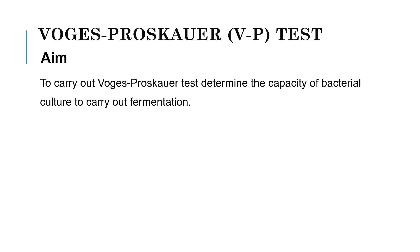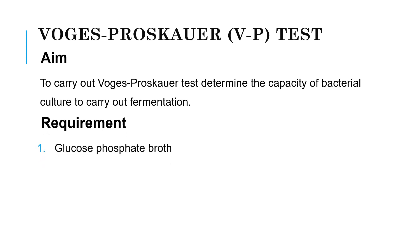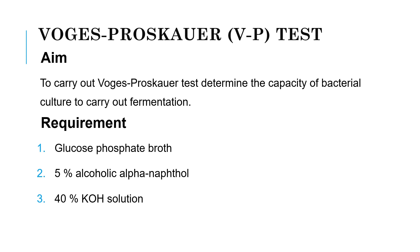In short, I will explain. This formic acid fermentation is of two types: the first one is mixed acid fermentation, and the second is 2-butanoldeide fermentation. In this test, we are going to determine the capacity of the culture to carry out the second type of fermentation, that is 2-butanoldeide fermentation. Now let's see the requirements: first one is glucose phosphate broth, second we require 5% alcoholic alpha-naphthol, third one is 40% KOH, and fourth one is test culture.